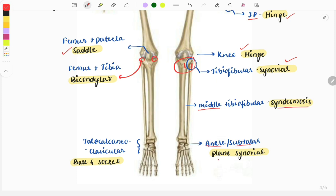The next joint, that is the ankle or the talocrural joint, is the plane synovial joint. This was also a previous year question, giving the image with marking, and the type of joint was asked.